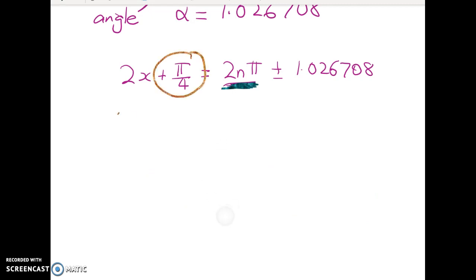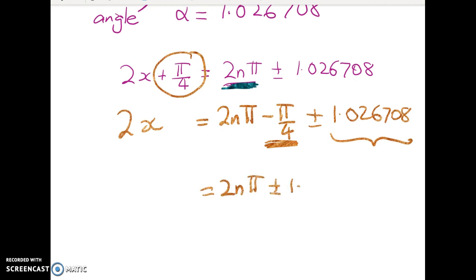Now we pretty mechanically go through and solve this equation. The first thing I notice is I've got this π/4 here. So I'm going to go 2x is equal to 2nπ minus π/4 plus or minus 1.026708. Now notice that I have put this π/4 over here nowhere near this thing, because the easiest mistake to make is to group those together. I'm going to go badly wrong. So when I'm doing general solutions and when I'm teaching general solutions, I always teach people to put the subtracted thing right next to the 2nπ.